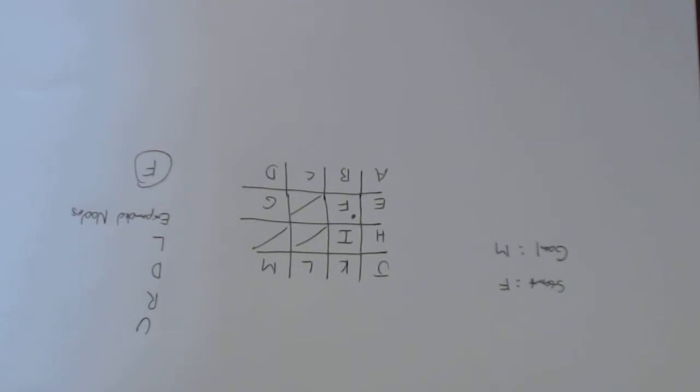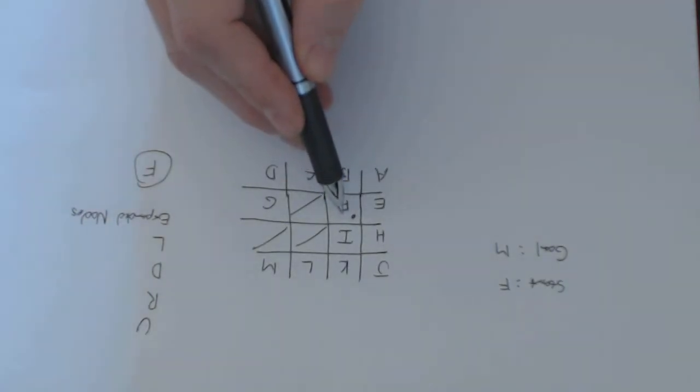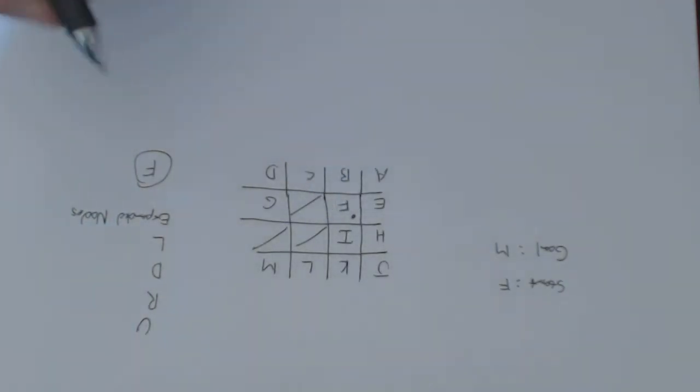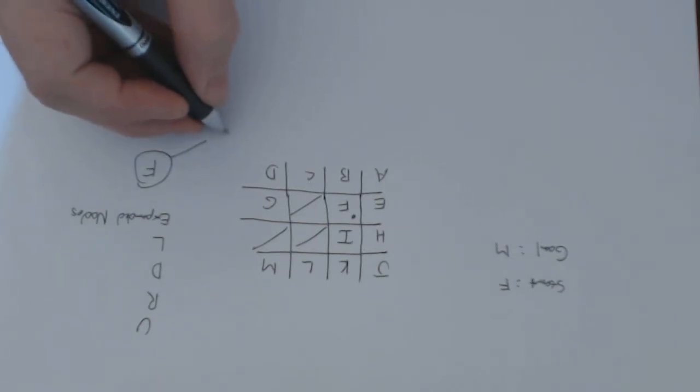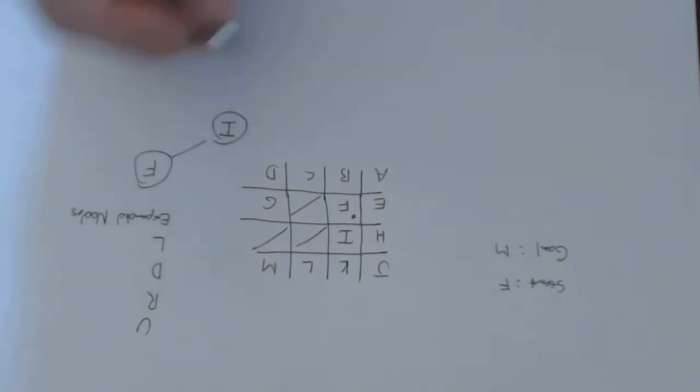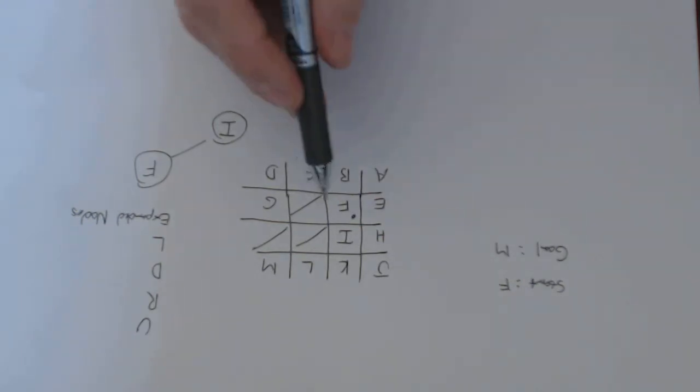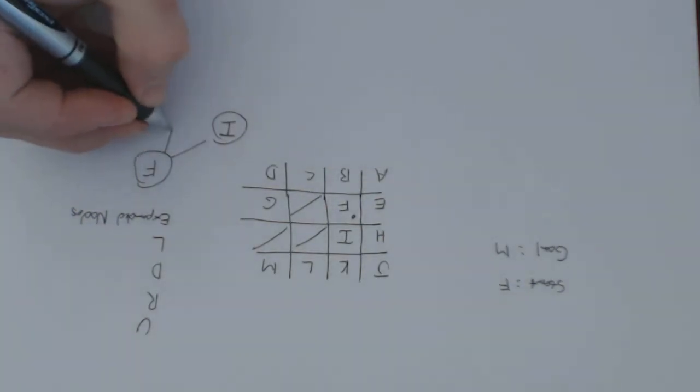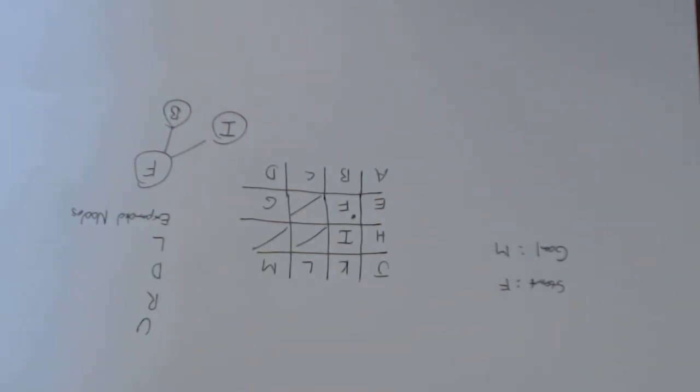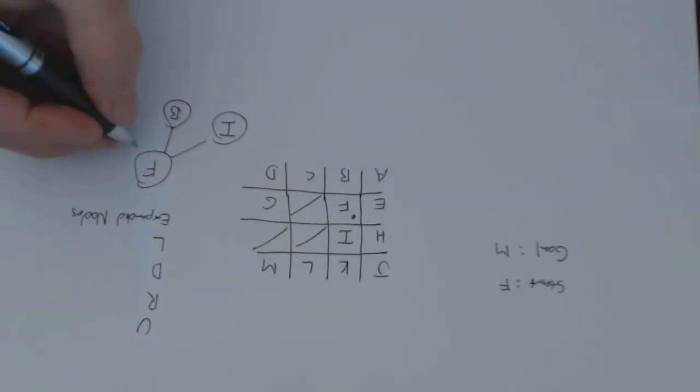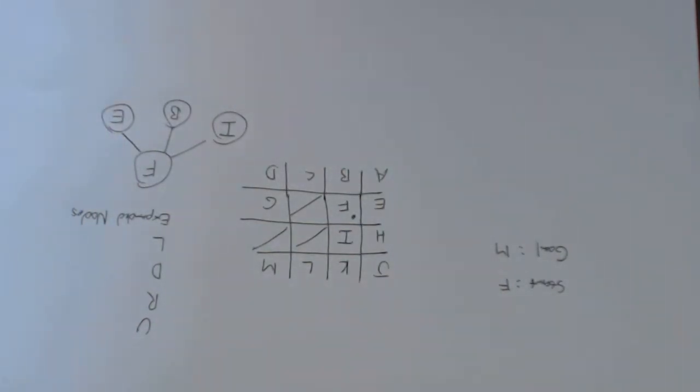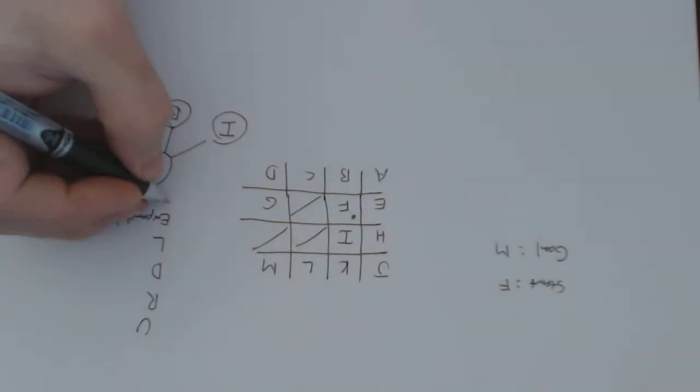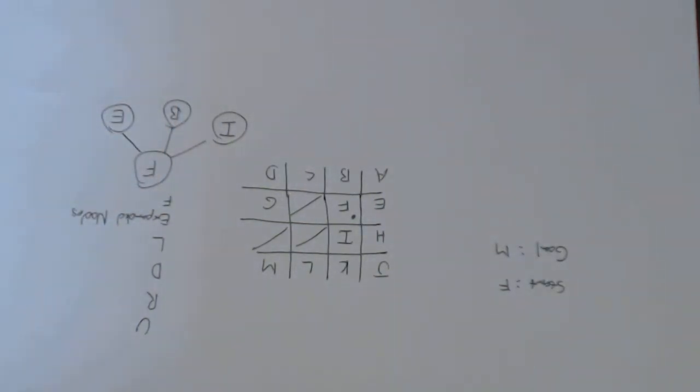So I'm going to expand F first. If I go F, the order I'm going to expand is up, which gives me I. Then right, I can't expand anything to the right. Down, which gives me B. And then left, which gives me E. And I've expanded F now, so I'm going to put F on that expanded nodes list.